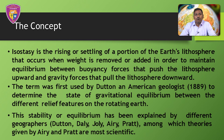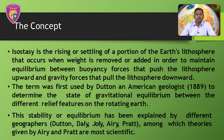Let's now see what isostasy is. Isostasy is the rising or settling of a portion of the earth's lithosphere that occurs when weight is removed or added, in order to maintain equilibrium between buoyancy forces that push the lithosphere upward and gravitational forces that pull the lithosphere downward. The term was first used by American geologist Dutton in the year 1889 to describe the state of gravitational equilibrium between the different relief features on the rotating earth. This equilibrium has been explained by different geographers like Dutton, Airy, Pratt, and others, but the theories given by Airy and Pratt are considered more scientific and useful today.